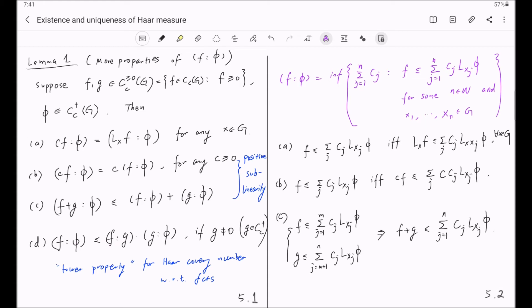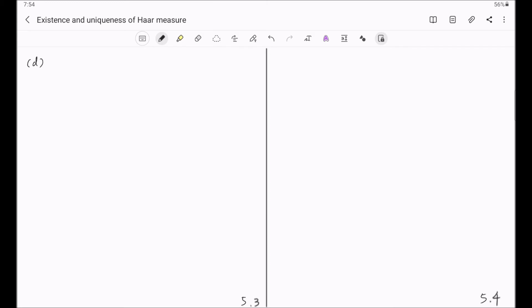The part D is the product relation. It might be slightly complicated. For part D, if F is less than or equal to the linear combination C times L sub X_J times G, notice that here we have already used the assumption that G is non-zero. If G is constant zero, then we cannot even set up this inequality. Because if F is positive somewhere, but G is constant zero, then this inequality may not hold. So because G is not constant zero, this inequality makes sense.